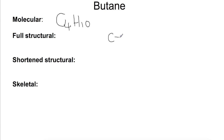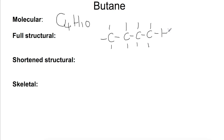The full structural formula shows all of the bonding present in your molecule, so for butane that is a chain of four carbons with the ten hydrogens surrounding them. This is easy enough to draw for a small molecule like butane, however if you're looking at complex pharmaceutical molecules this would take a long time to draw.